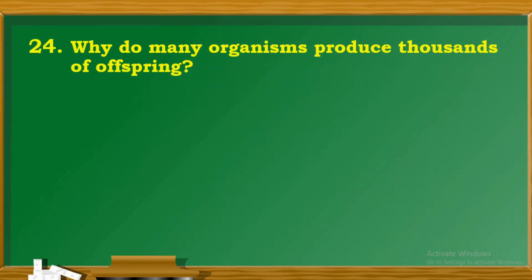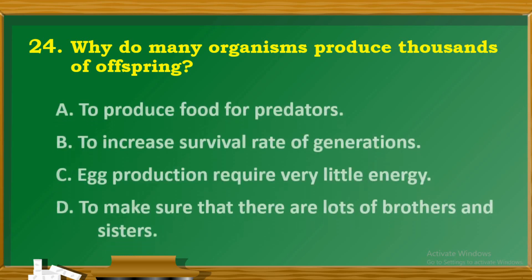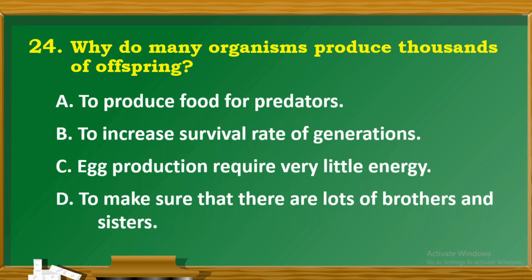Question 24: Why do many organisms produce thousands of offspring? A. To produce food for predators. B. To increase the survival rate of generations. C. Egg production requires very little energy. D. To make sure that there are lots of brothers and sisters.